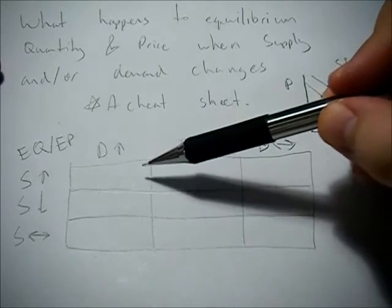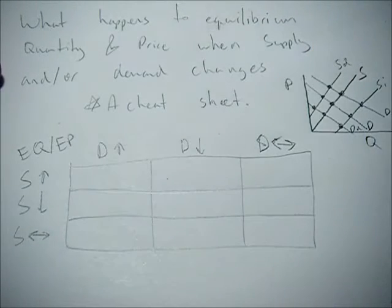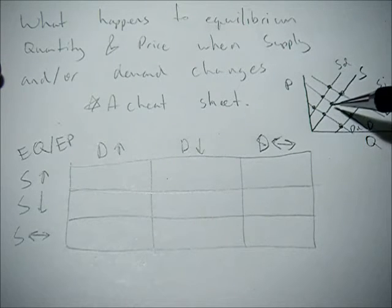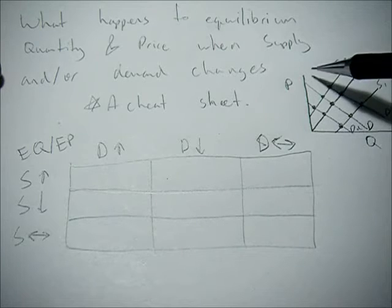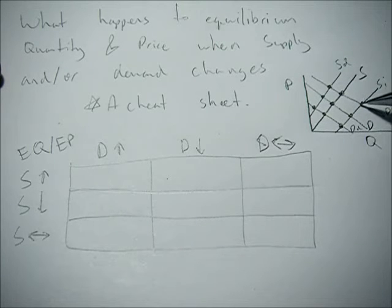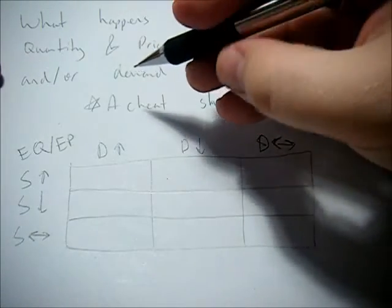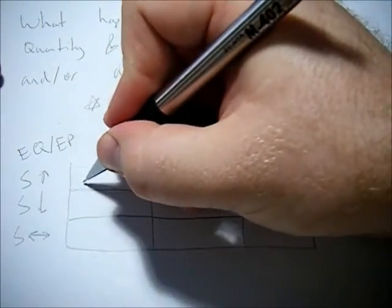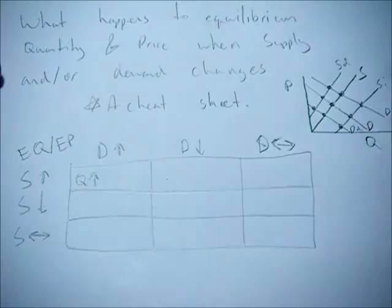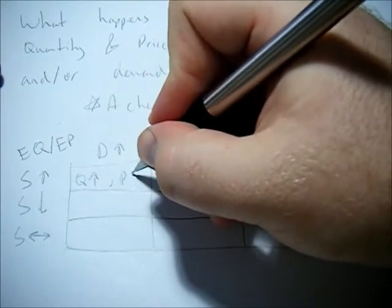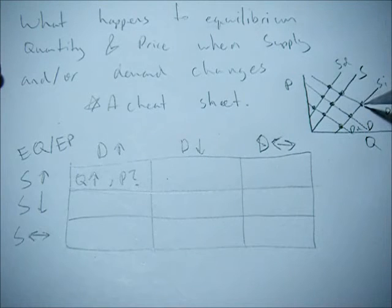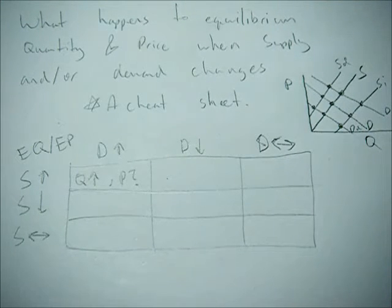The first scenario: if demand increases and supply increases, starting with our original supply and original demand curves, both shift outward. In this case, we know that equilibrium quantity will be higher — Q goes up — but what happens to equilibrium price, we don't know. In this example it stayed the same, but it could go up or down depending on the magnitudes of the shifts.